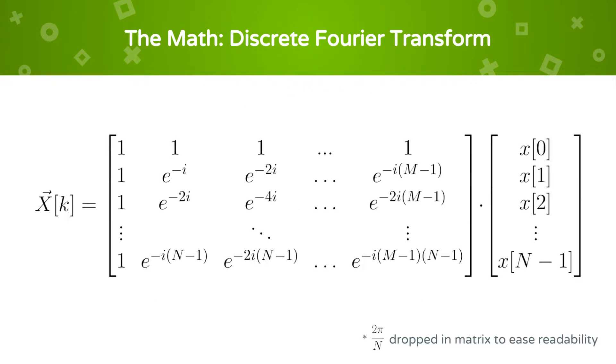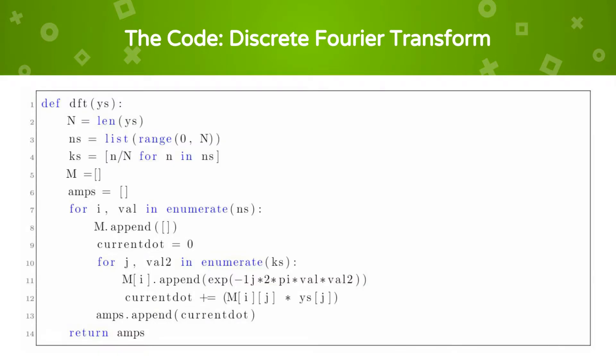The signal in the frequency domain with frequencies from k equals 0 to k equals N minus 1 can be written in full as shown. The information encoded in the vector can be used to reconstruct the original signal. Our discrete Fourier Transform function follows the matrix equation just shown to calculate the discrete Fourier Transform of a list of values.